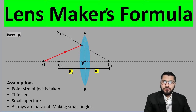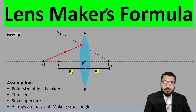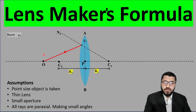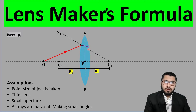The object is placed on the left side, marked as O. A ray of light emitting from the object hits the first surface. Since it is going from a rarer medium to a denser medium, it bends towards the normal. You can see the purple line — it bends towards the normal rather than going straight, due to the change in medium.